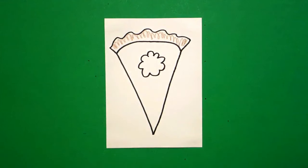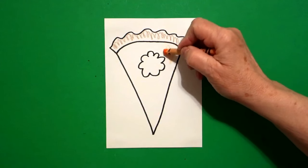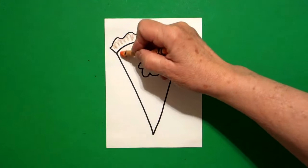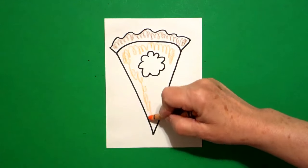Then the second thing I'm going to do is I'm going to take my orange and I'm going to color all the way around for my pumpkin.